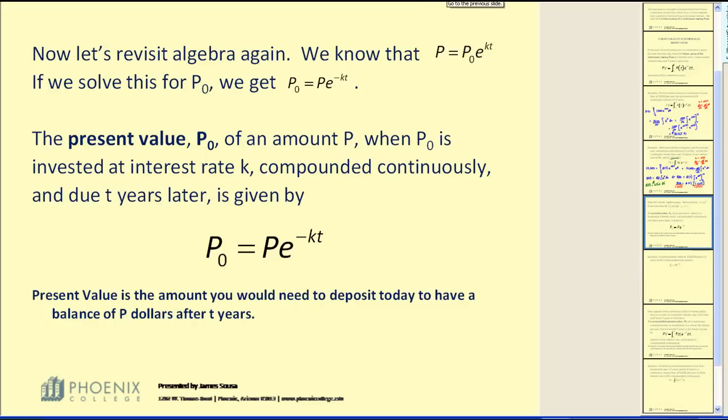Now let's revisit algebra again. We know the continuous interest formula is given by P equals P₀ times e to the power of kt. Well, if we solve this equation for P₀, we will get P₀ is equal to P times e to the power of negative kt.